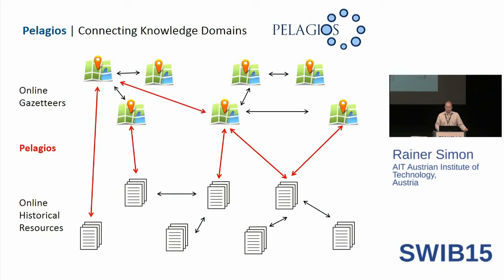We also have a mechanism based on linked data which creates connections between gazetteers. You can say here's Athens in my gazetteer and here's Athens in your gazetteer — let's create a connection. And again, through this network, we might make connections between documents at the bottom level which may not have existed before.